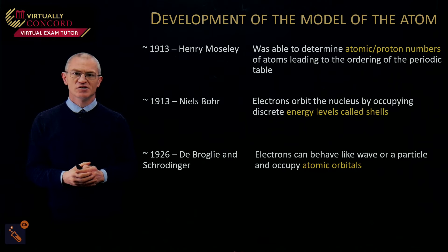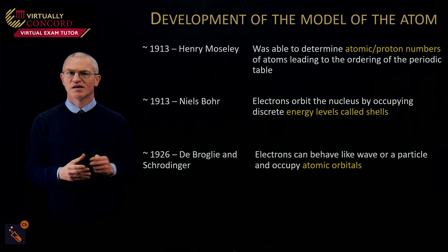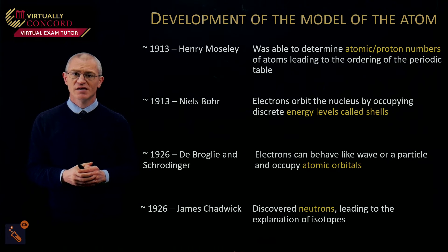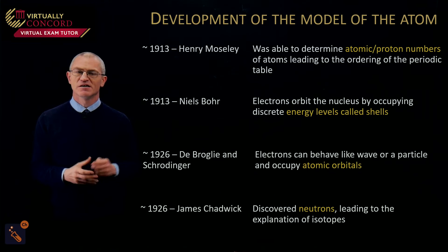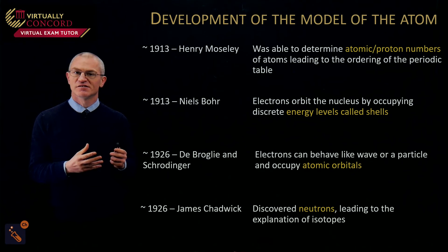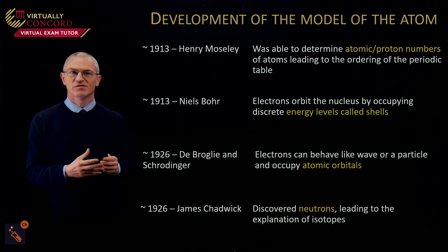De Broglie and Schrödinger then found out about wave-particle duality, which led to atomic orbitals. Finally, James Chadwick discovered neutrons. I haven't gone into huge detail on any of these because you don't really need it, but you do need to recognise what the models look like — so we're going to go through that next.